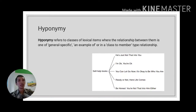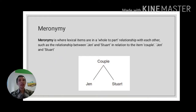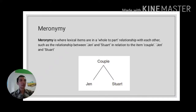The last type is meronymy — where lexical items are in a whole-to-part relationship with each other. For example, 'couple' brings to mind the combination of man and woman or boy and girl. Going back to the tree example: the meronyms of 'tree' are not other types of trees, but rather its parts — trunk, branches, leaves, roots, and many other things. This is distinct from hyponymy, which deals with class membership.